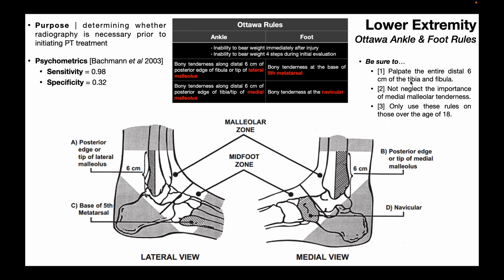When performing this assessment, be sure to palpate the entire distal six centimeters of both the tibia and fibula. A common mistake is to only target the most prominent aspect of the lateral and medial malleoli, but remember — you need to go up from the base of each malleolus six centimeters on both sides. Also, don't neglect the importance of medial malleolar tenderness, as it is sometimes overlooked. Medial malleolar tenderness often does indicate a fracture, small or otherwise.